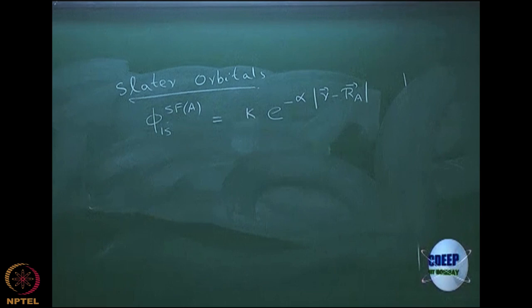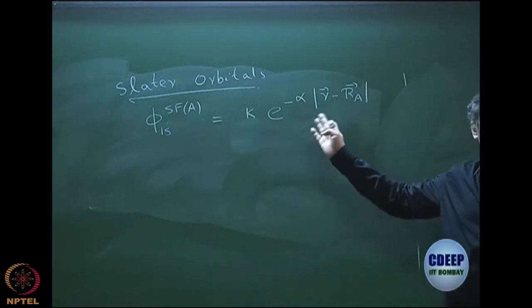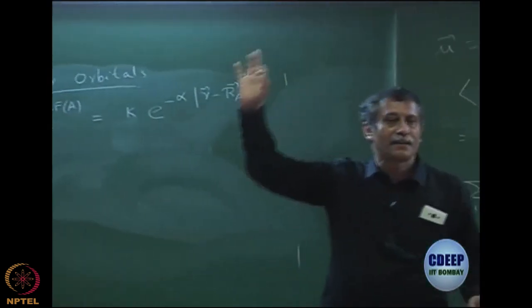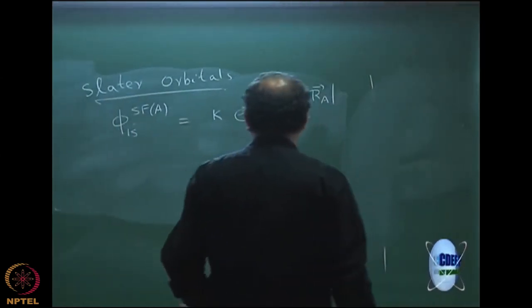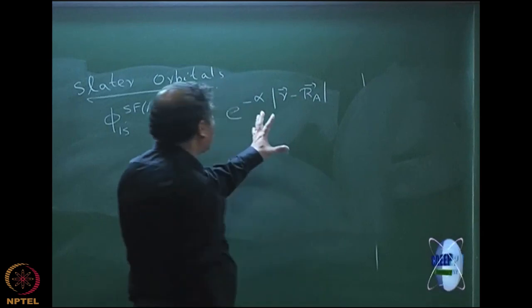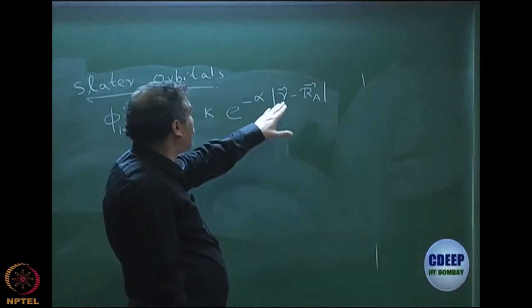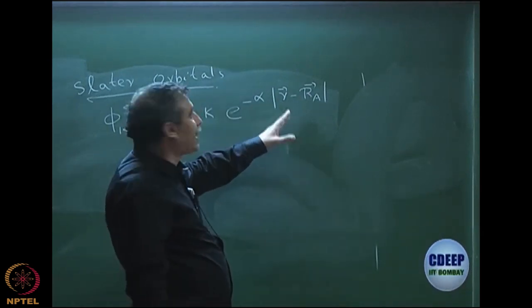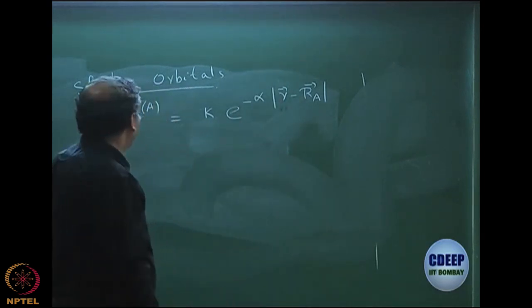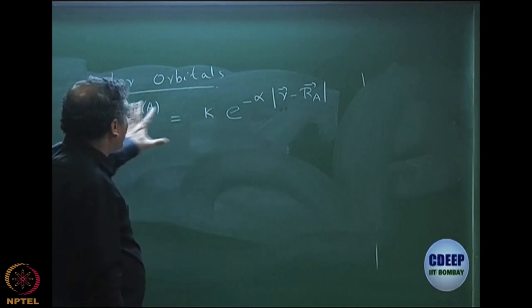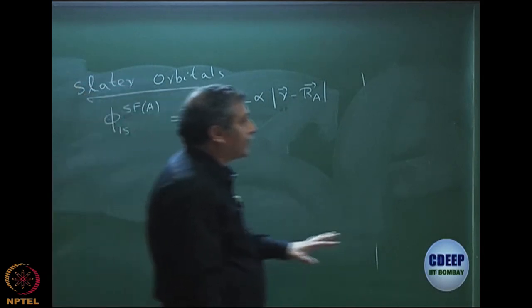This is basically some constant. If you look at the hydrogen atom it is very similar — you have exponential minus r. In general this Slater function can be like this; I have written it in terms of a vector for generality. For the hydrogen atom, r is a scalar quantity and then you can write down the integrals.